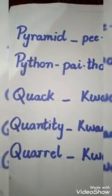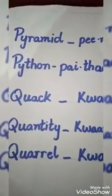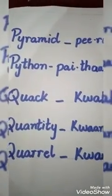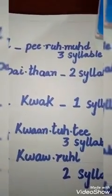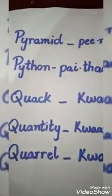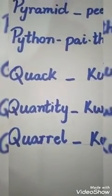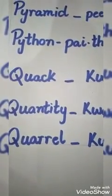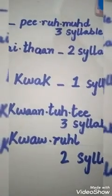Our next word is 'Quantity'. Q-U-A-N-T-I-T-Y, Quantity. Quantity is a three-syllable word. Our last word is 'Quarrel'. Q-U-A-R-R-E-L, Quarrel. It is a two-syllable word.